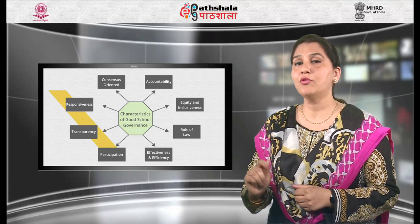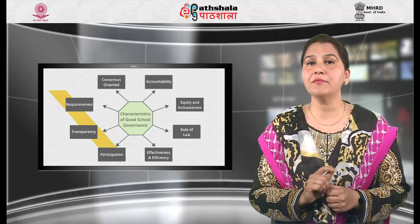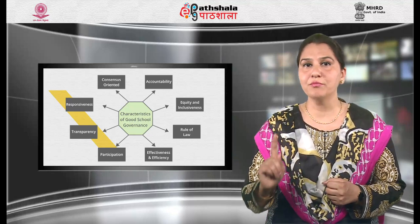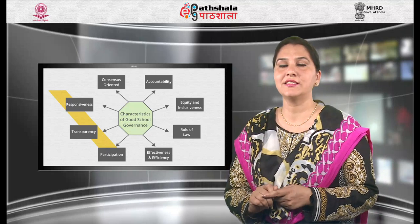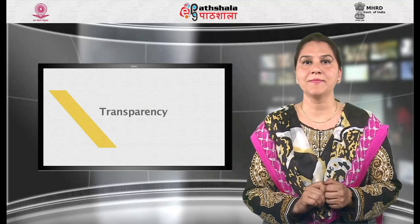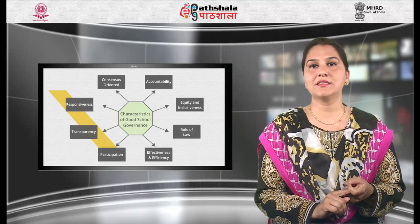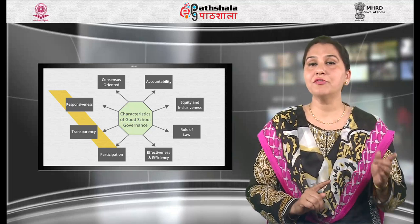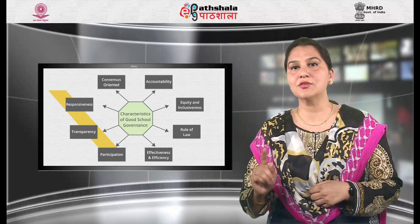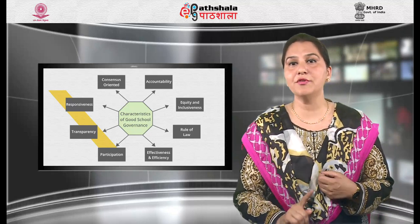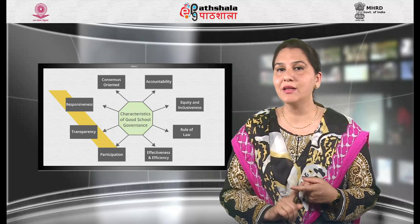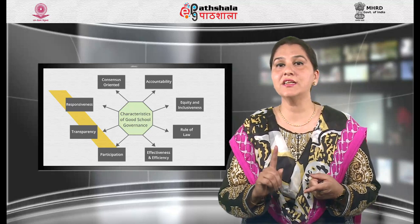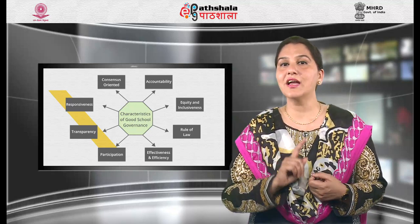Second is rule of law. Good school governance requires fair legal frameworks that are enforced impartially. It also requires promotion and protection of human rights. Third is transparency. Transparency means that decisions taken and their enforcement are done in a manner that follows the rules and regulations of the school. It also means that information is freely available and directly accessible to those who will be affected by such decisions and their enforcement — for example, parents, teachers, pupils and sponsors.